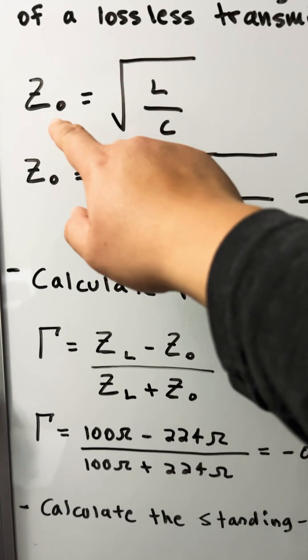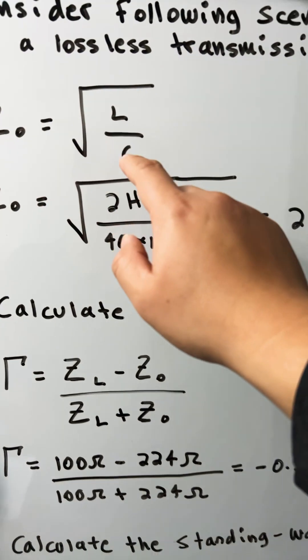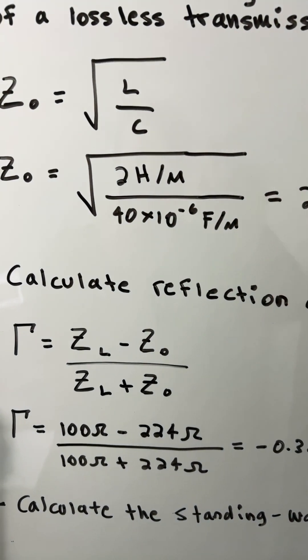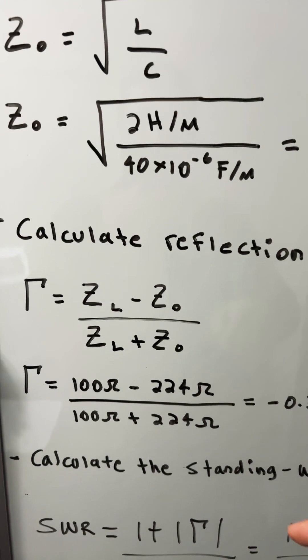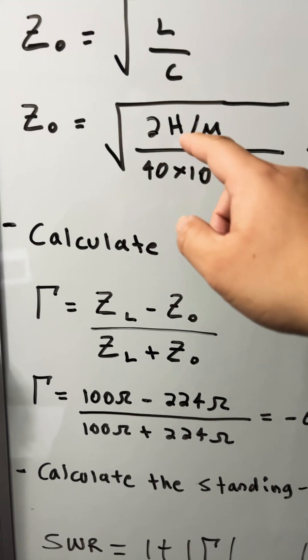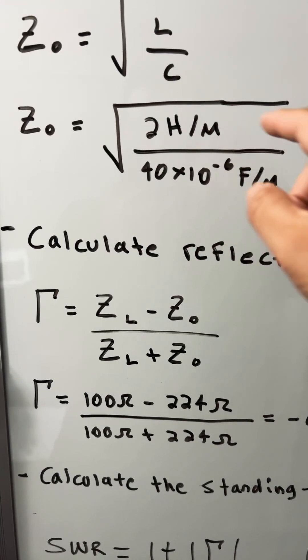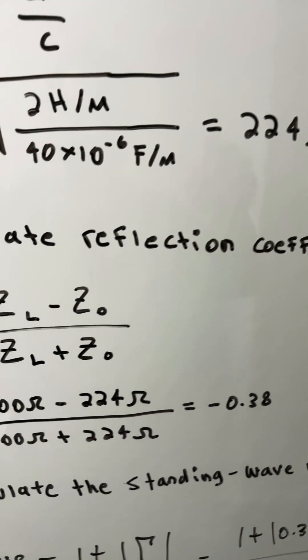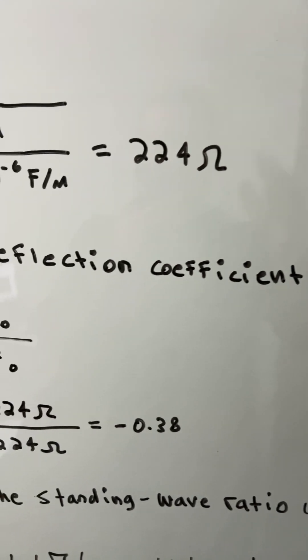So this is the characteristic impedance equation and it's a square root of inductance over capacitance. We will plug in the numbers: 2 Henry per meter divided by 40 times 10 to the negative 6 farads per meter and that will give you 224 ohms.